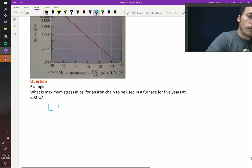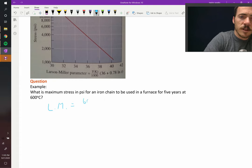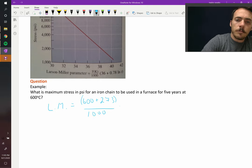The Larson-Miller parameter is equal to the temperature in Kelvin. So we have 600 Celsius, that's going to be 600 plus 273 to turn it into Kelvin, divided by 1,000.